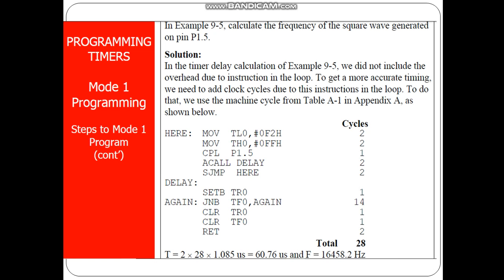Let us write few programs for timers and counters in both assembly level language and C programming. In this particular question, you are asked to find out the frequency of the square wave generated on port 1 pin 5. In the last session, a similar question was solved, but the difference is that there we have not considered the delay offered by the instructions. We know that it takes some time for each instruction to get executed, given in terms of machine cycles. In this particular question, we will be considering the delay offered by each and every instruction.